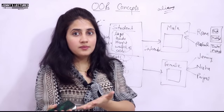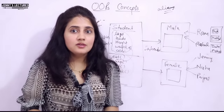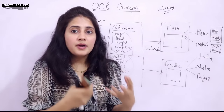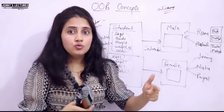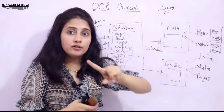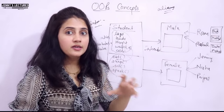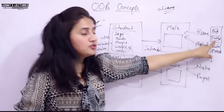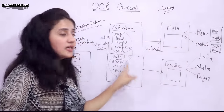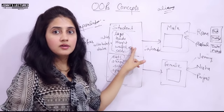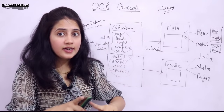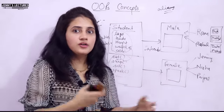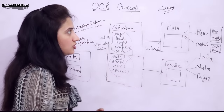If I am a faculty in the computer science department and I need data from the mechanical department, I cannot directly access it. I first talk to a person in mechanical department, request them, and through that person I access the data. The data of mechanical department — the employees and faculties — are a single unit: the mechanical department. They are encapsulated. The data is private to that department only. This increases the privacy and security of data — which is the main reason we switched from POP to OOP.